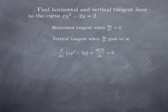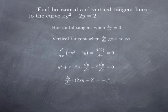On the right-hand side, the derivative of a constant is 0. On the left-hand side, the derivative of xy squared is a product, so I use the product rule: 1 times y squared plus x times the derivative of y squared, which by the chain rule is 2y dy/dx. Then we subtract 2 times the derivative of y. Collecting terms with dy/dx and moving y squared to the right, we divide both sides by (2xy minus 2), giving dy over dx equals y squared over 2, multiplied by 1 over (1 minus xy).